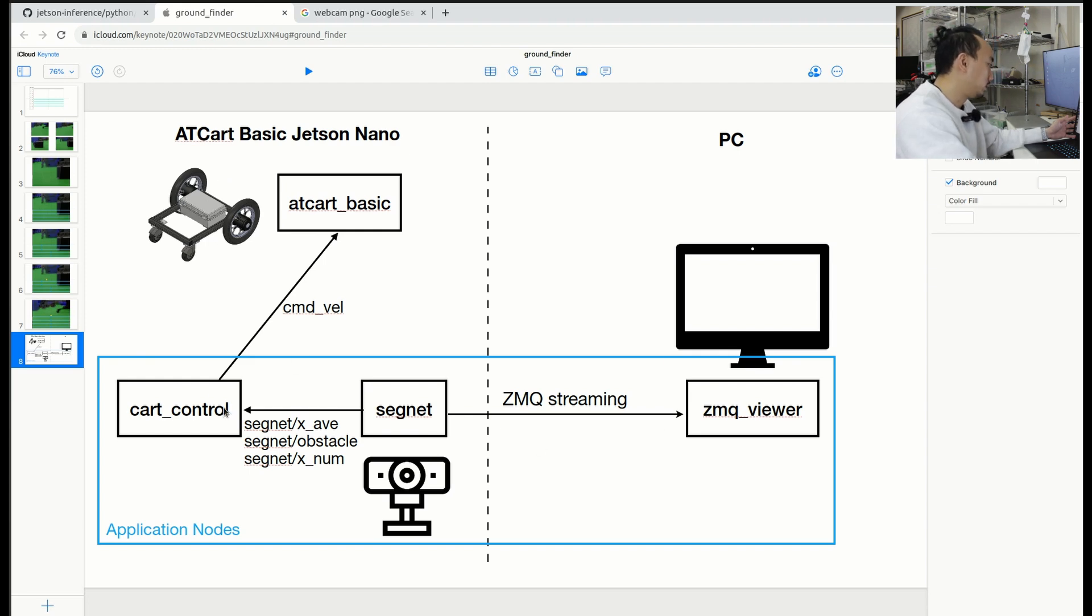The three nodes down here are the cart control, segnet, and ZMQ viewer. These are the application nodes. It can be actually anything about your application. The cart control is going to publish the command velocity.